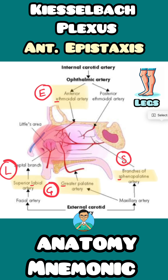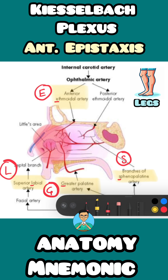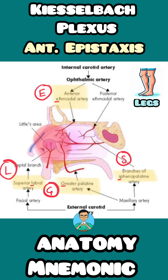L-E-G-S. What does not form a part of the Kisselbach's plexus is the posterior ethmoidal artery.